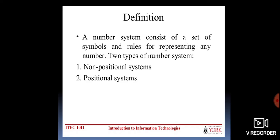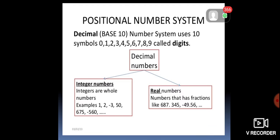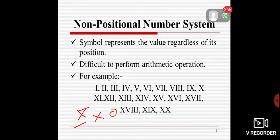A number system consists of a set of symbols and rules for representing any number. There are two types of number system: first is non-positional systems, and the second is positional systems. In a non-positional number system, this system does not associate any weight to the digit depending on its position in the given sequence.